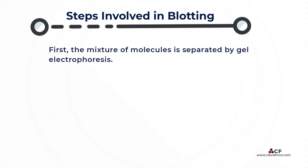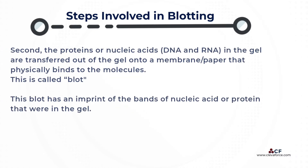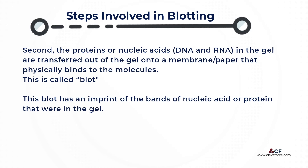Similarly, there are three main steps involved in blotting. First, the mixture of molecules is separated by gel electrophoresis. Following gel electrophoresis, the proteins or nucleic acids — DNA and RNA — in the gel are transferred out of the gel onto a membrane or paper that physically binds to the molecules.